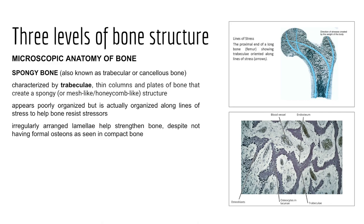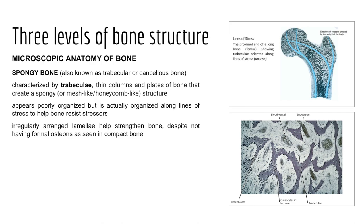Spongy bone is characterized by thin plates called trabeculae and spike-like pieces called spicules, creating a honeycomb-like structure deep to compact bone. Spongy bone appears poorly organized because it lacks osteons and central canals, but is actually oriented along lines of stress to help bone transfer force without breaking. Microscopically, we still see concentric rings and lacunae filled with osteocytes, just without a central canal.